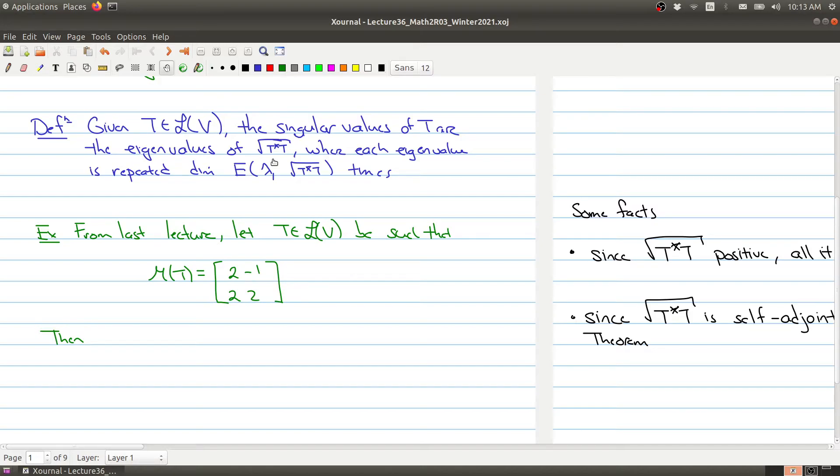I thought I'd just do an example here. From the last lecture, we'll look at this example through today's lecture. Let's take the operator whose associated matrix looks like 2, minus 1, 2, 2.